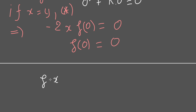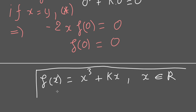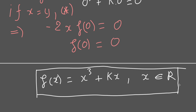Therefore, the final result of this functional equation is f(x) equals k·x squared, for x belonging to the real numbers, for any constant k.